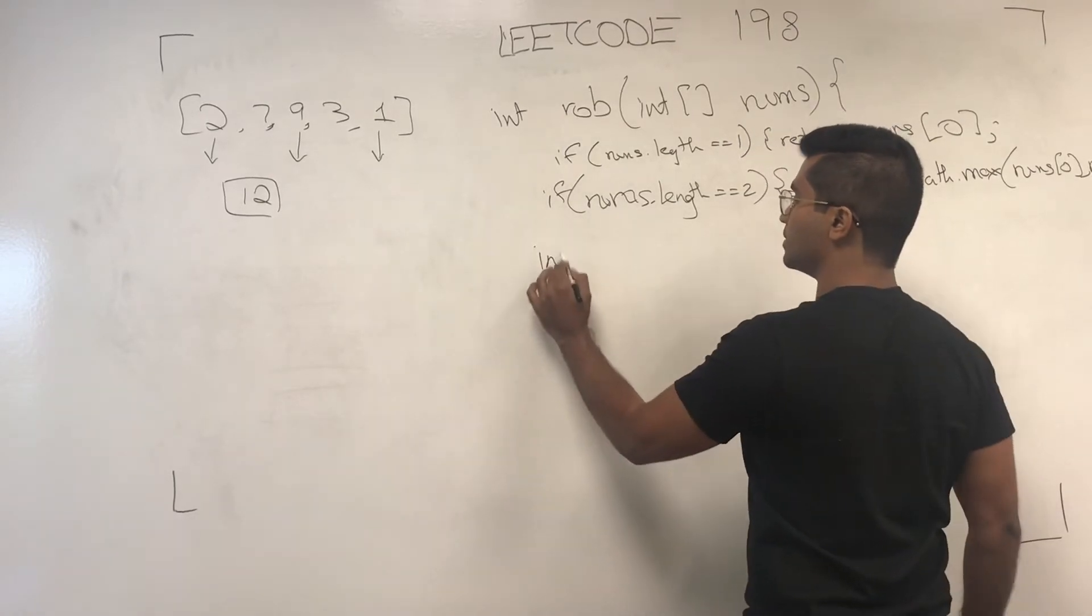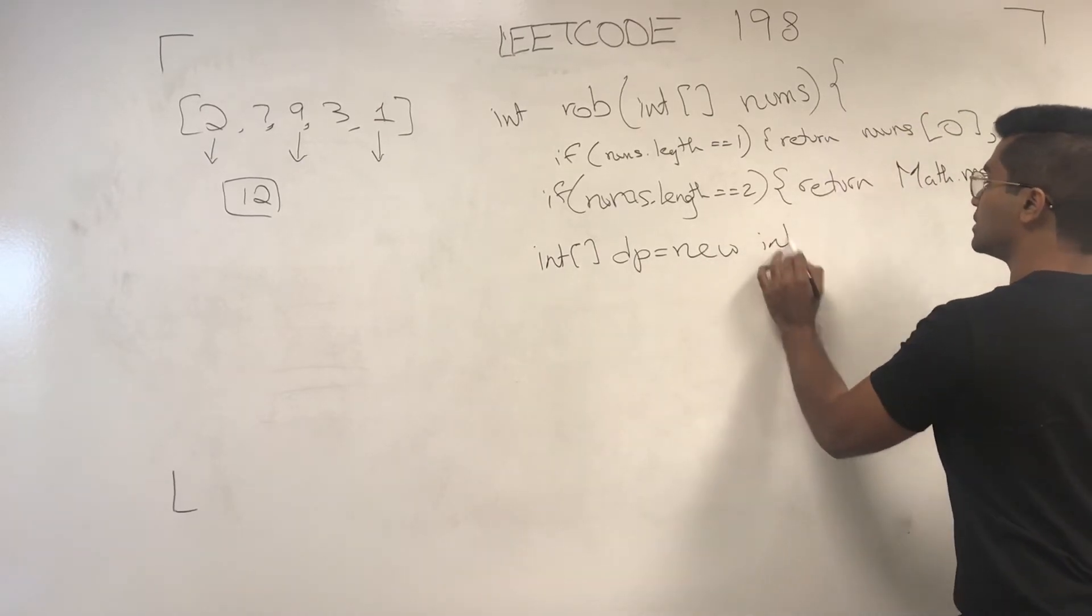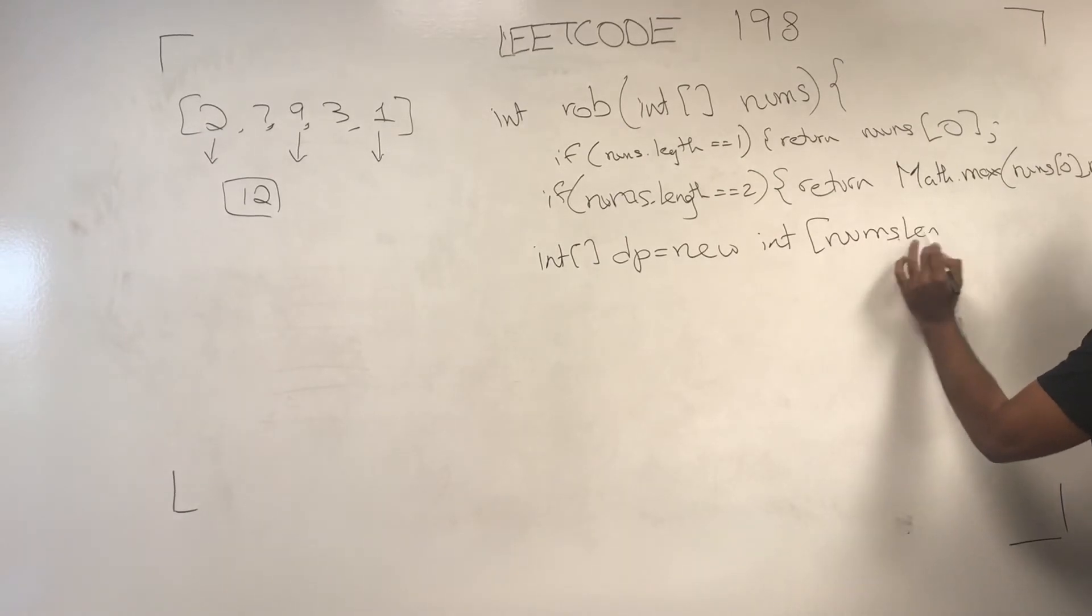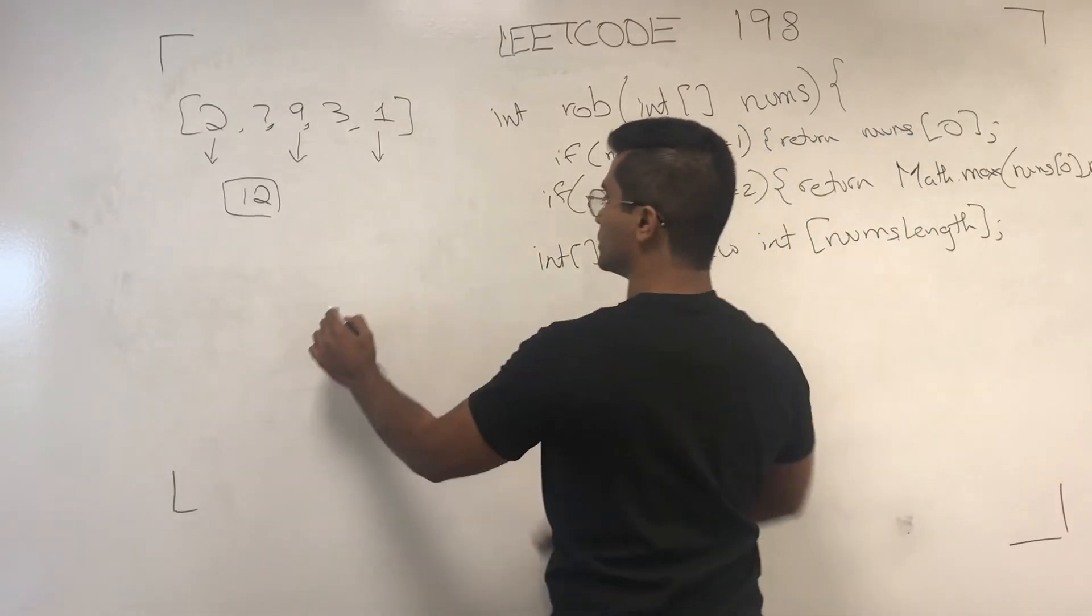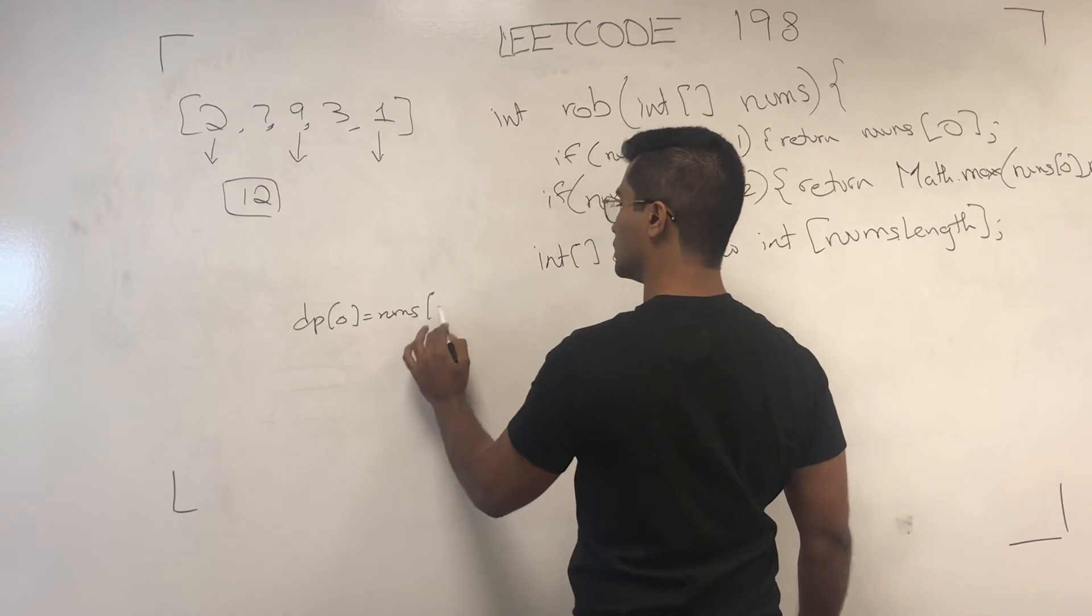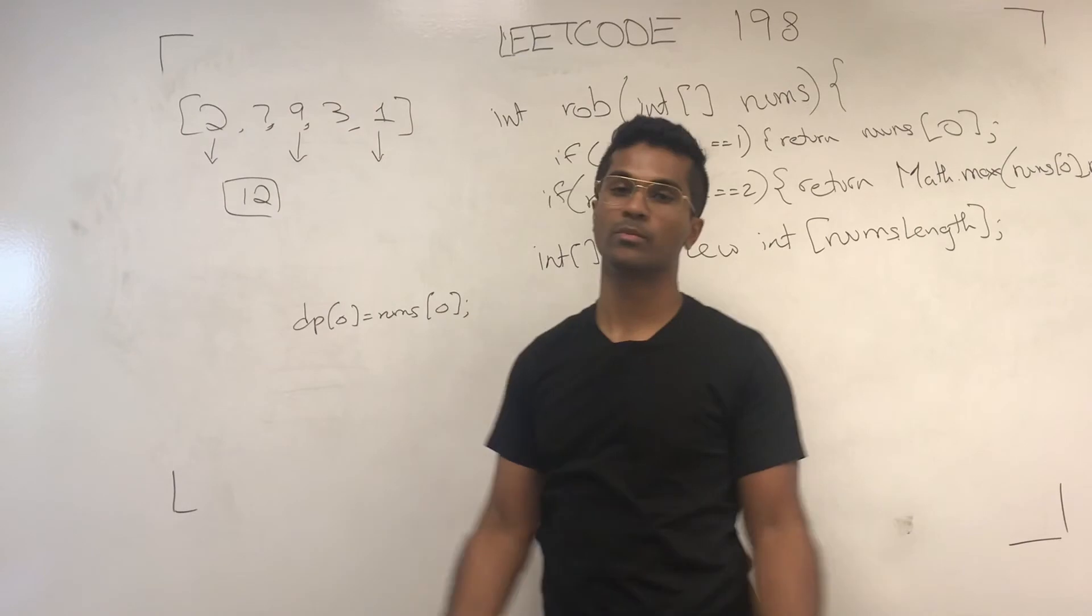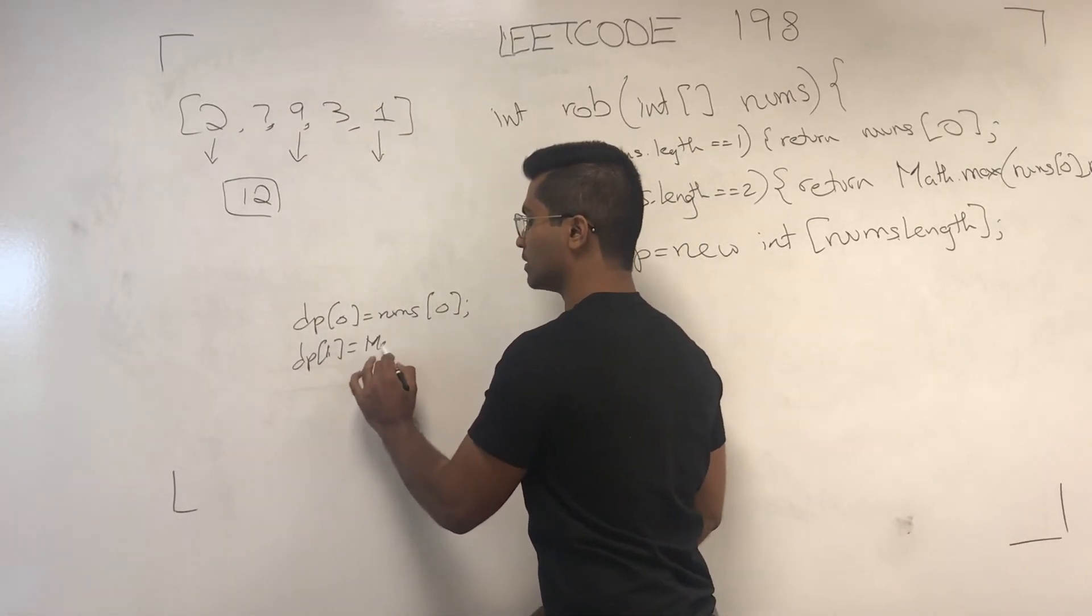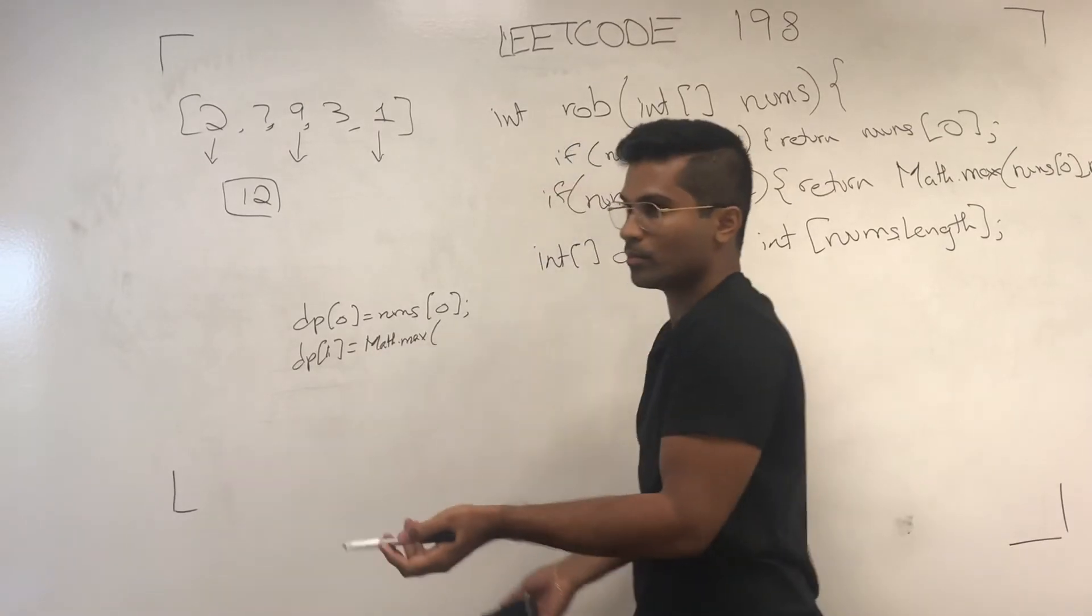Now if it's more than 2, that's when we need to use this step. Hold on, let's initialize the DP. int DP is new int nums.length. So DP of 0 is just going to be nums of 0. That's saying, okay, until the first house, what's the most I can get? Now until the second house, I can either take the first one or I can take the second one.